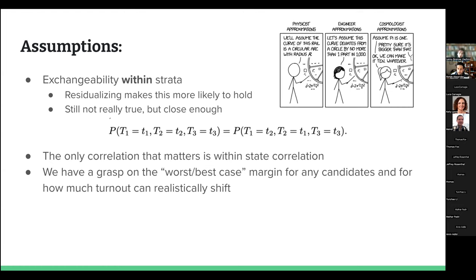The final major assumption is that we have a pretty good grasp on the worst and best case margin for any candidate and how much turnout can realistically shift. For example, in the worst case for Democrats, they won't lose a competitive county by more than 25 percentage points, or that turnout won't increase by more than 150% in any county. We can be pretty broad here with these bounds.